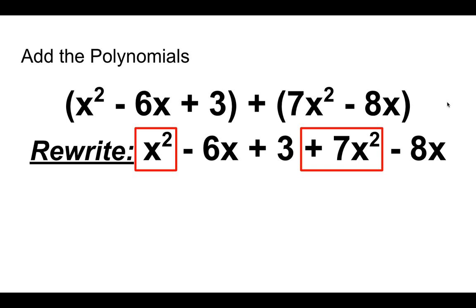Notice x squared and 7x squared look the same, and there's a 1 in front of that x squared right here. So 1 of something plus 7 of something will give us that 8x squared that we'll see in a second. Now we have negative 6x and negative 8x, those look the same. And this plus 3 doesn't really have a partner, and that's okay.